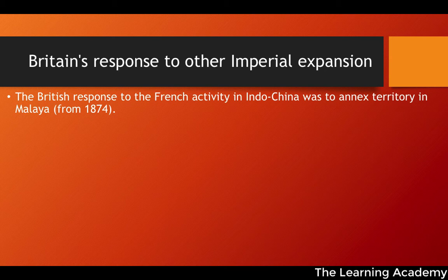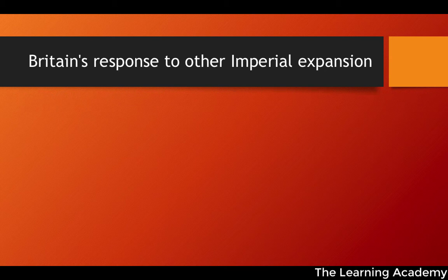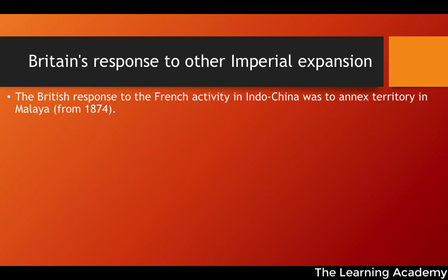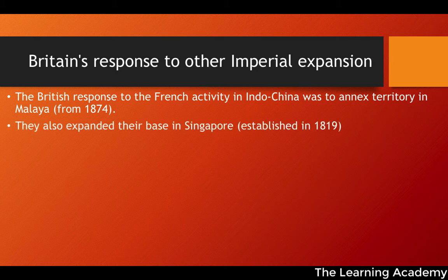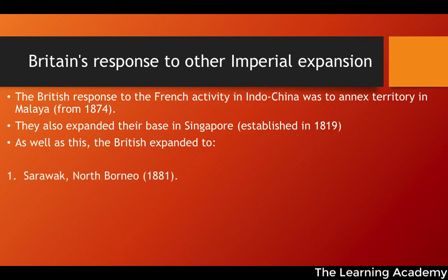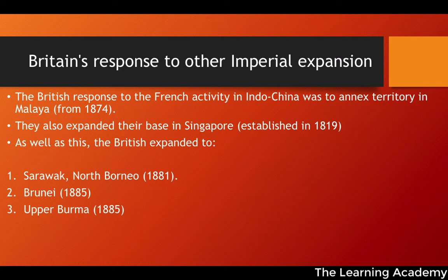The British response was to try and race for annexation and conquest over different areas of the world. For example, the British response to French activity in Indochina was to annex territory in Malaya from 1874. They also expanded their base in Singapore, originally established in 1819, and expanded to Sarawak and North Borneo in 1881, to Brunei in 1885, and to Upper Burma in 1885 as well. As French expansion continued in Indochina in places like Vietnam, the British response was to expand there as well.